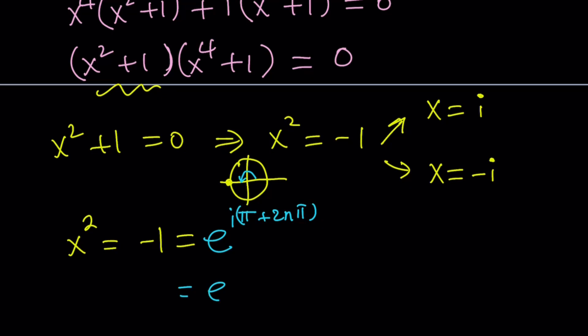And obviously, this can be simplified a little bit. You can write this as (2n + 1)πi. So this is -1.